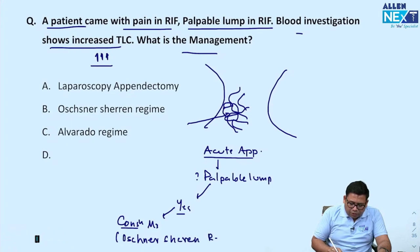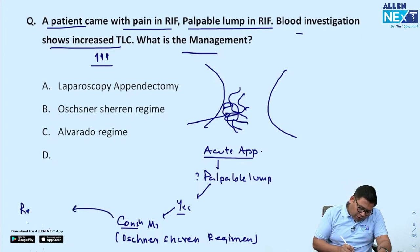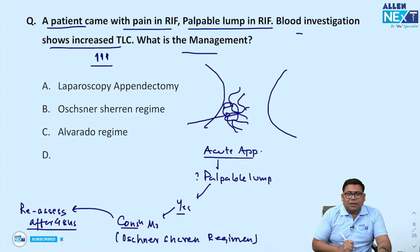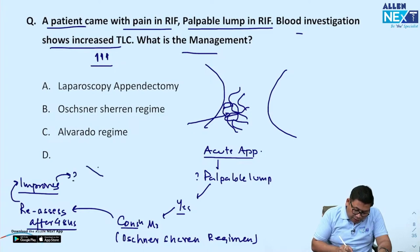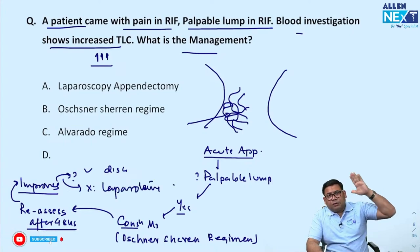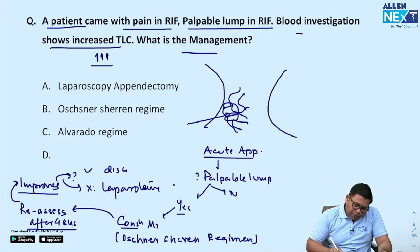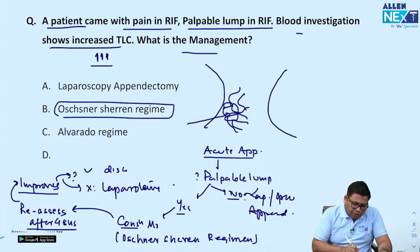The Ochsner-Scherin regimen is very important. Reassess after 48 hours. If the patient improves, discharge the patient. If the patient worsens, you must plan a midline laparotomy because you might require even a right hemicolectomy. If there is no palpable lump, you can go for laparoscopic appendicectomy. Open appendicectomy is no longer done.